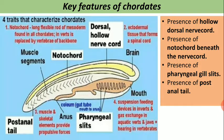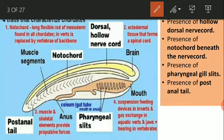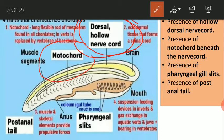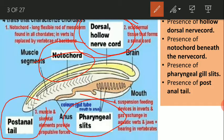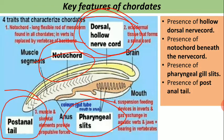The key features of a chordate are: presence of a hollow dorsal nerve cord, present just beneath the epidermis; under the nerve cord there is the notochord, which is replaced by the vertebral column in the case of vertebrates; they have pharyngeal gill slits; and post-anal tails. These are the four unique features of the chordates.